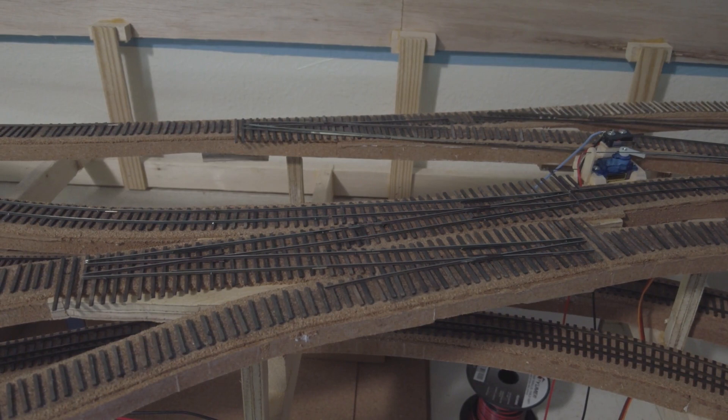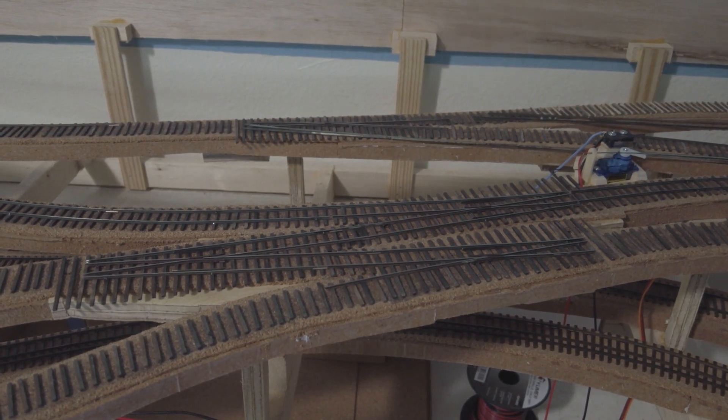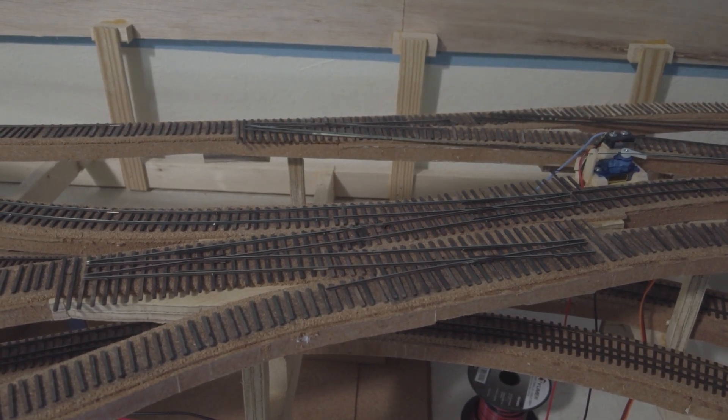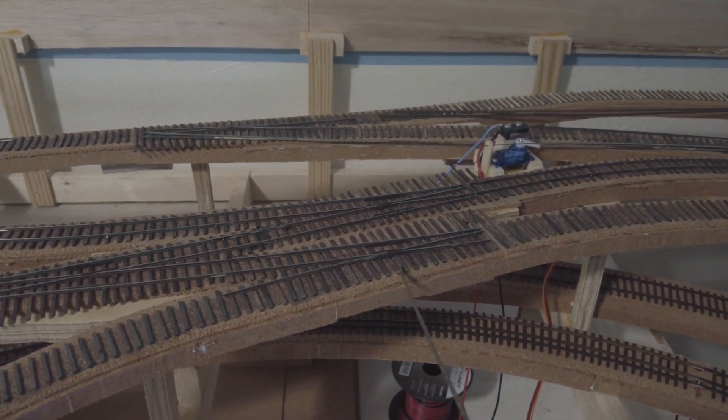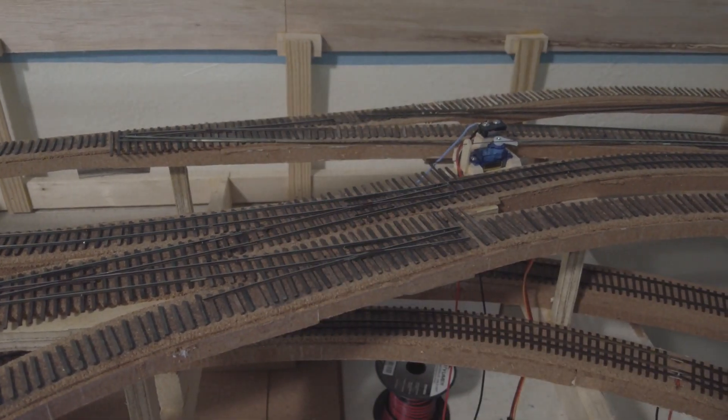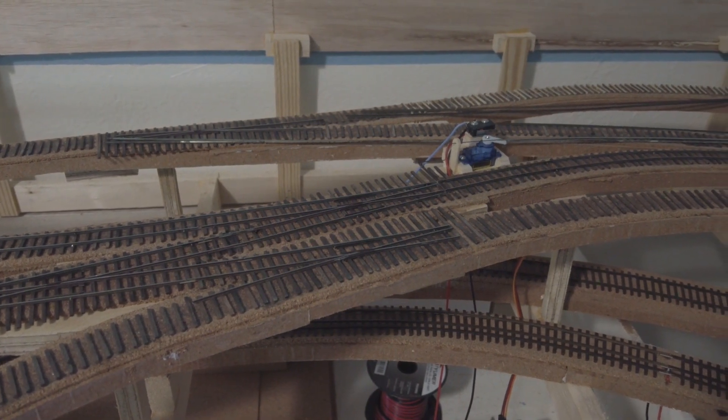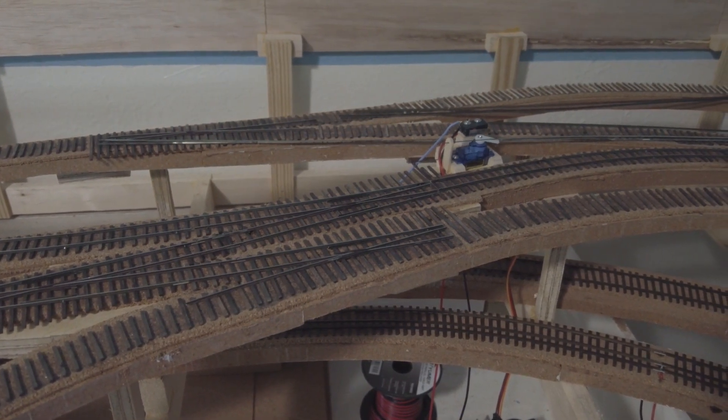All the rest of the narrow gauge stub switches are now spiked down, and all of the guard rails, except for the one right here and those two back there where the side rails aren't in place yet, have been glued down.